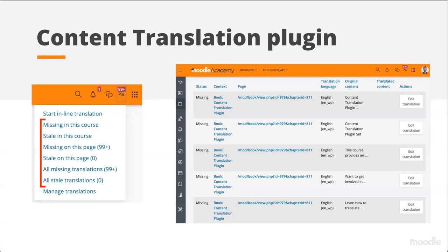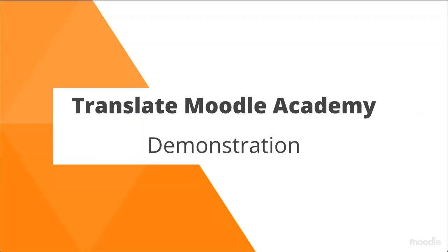Clicking on any of those icons inline allows you to add or update a translation. On the left you see the original content written in English, and on the right you provide a translation into your language. Once saved, the translated content is displayed on the page and the translation icon updates to reflect the new status. That translation will then be visible to all users viewing that content with that specific language set. You can also view and manage translations for the current language across a page, course, or the whole site from the content translation menu, displaying a report of translatable content.